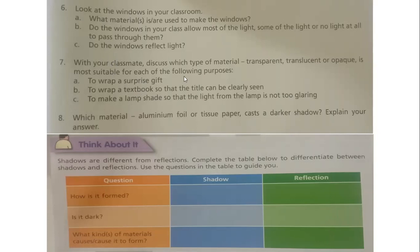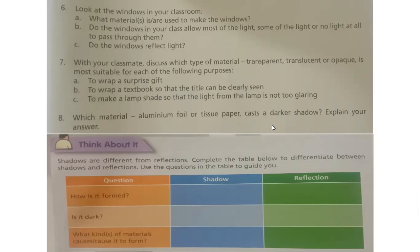Discuss which type of material — transparent (allows all light to pass through), translucent (allows most light but blocks some), or opaque (blocks all light) — is suitable for each purpose: to wrap a surprise gift where you don't want the contents seen; to wrap a textbook so the title can be clearly seen, like lamination; to make a lamp shade so the light is not too glaring — you don't want to block all light but want to block some.